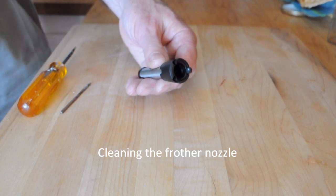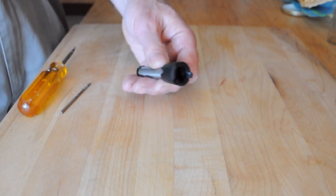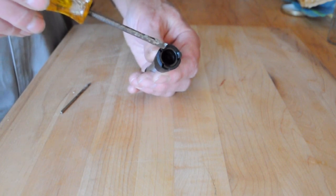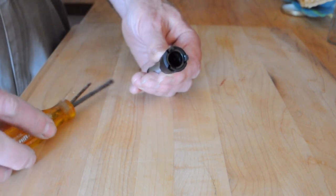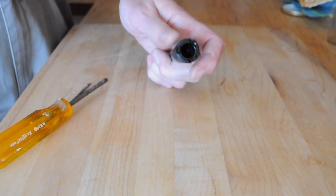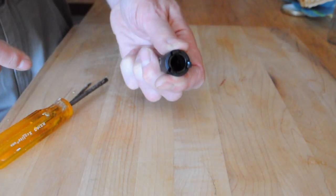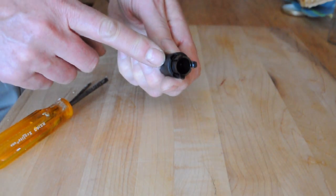Here we have the frother which has all sorts of problems that people run into. The biggest problem is these three clips here which hold it onto the wand tend to break off. One of the problems that not every user understands is to get this off the wand, you have to slide this collar down.